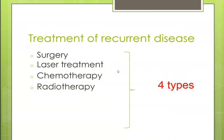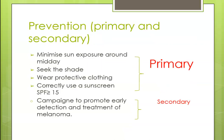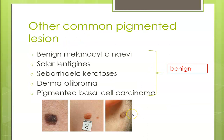For recurring disease, there are four types of treatment available, and surgery is the most common. For primary prevention, the best approach is to reduce sun exposure by seeking shade, wearing protective clothing, or applying sunscreen with SPF of at least 50. Campaigns to promote early detection and treatment of melanoma are another way to prevent it.